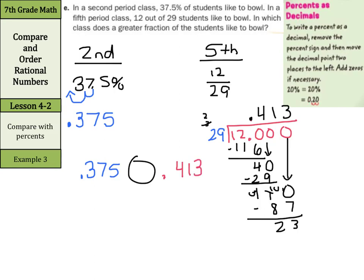I have 0.375 and I can now compare that to 0.413. As I compare these decimals now, I have 375 thousandths compared to 413 and some extra thousandths. If I just compare 375 to 413, 375 is less than 413, and the same thing is true here. So if we can get them to the common place value, we can order these much more simply. Which class liked to bowl more? 5th period.